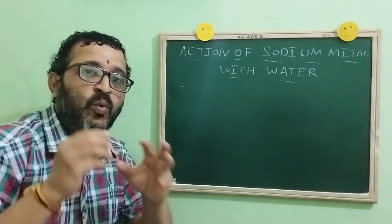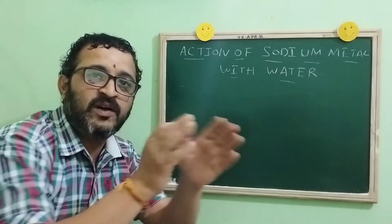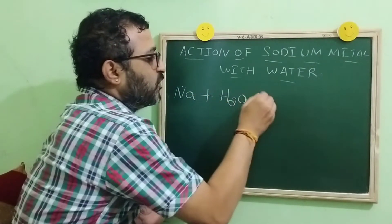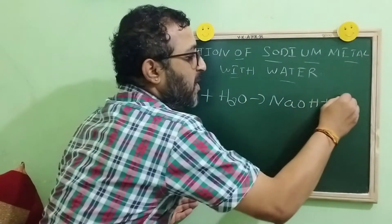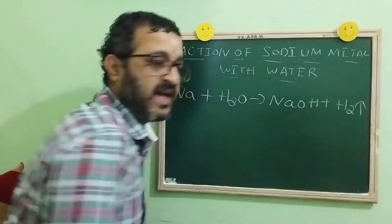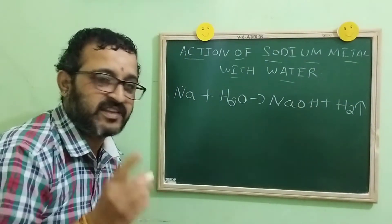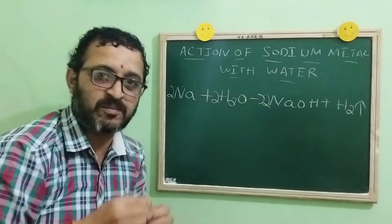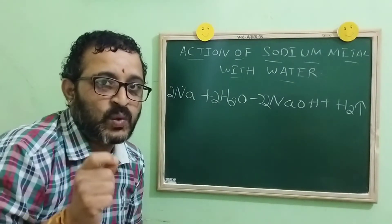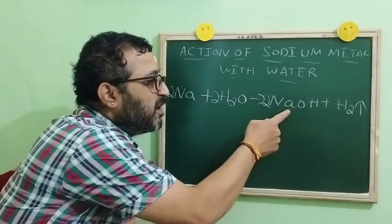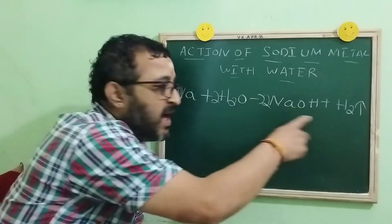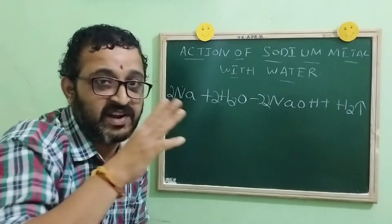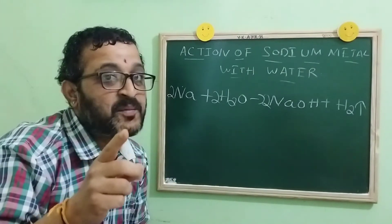Today's topic is what will happen when sodium reacts with water. When sodium reacts with water, you are going to get sodium hydroxide and a highly flammable gas — which is hydrogen. When you balance the equation, it is 2Na + 2H₂O → 2NaOH + H₂. In today's experiment, we are going to see the liberation of sodium hydroxide and how hydrogen burns with a pop sound. We will now proceed with the practicals.